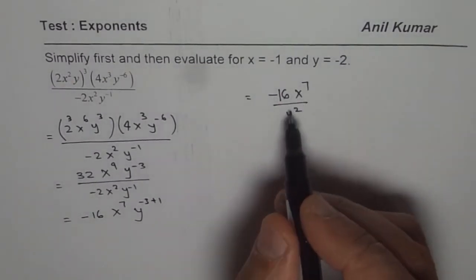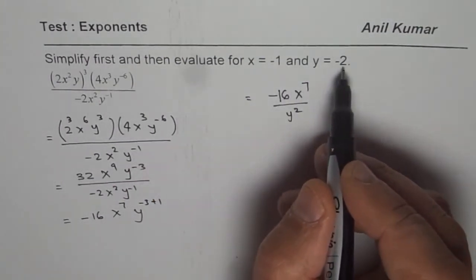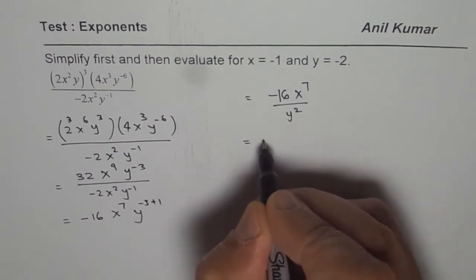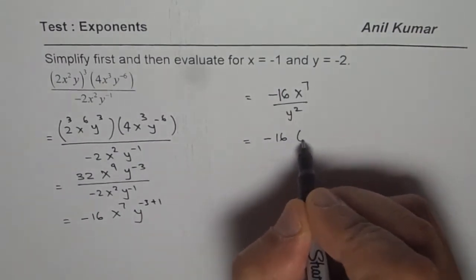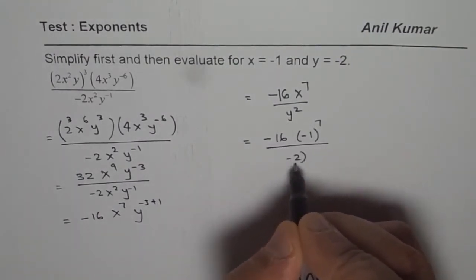So that is how we can simplify the given expression. Now let us substitute x as minus 1 and y as minus 2. So we get minus 16 times minus 1 to the power of 7 divided by minus 2 square.